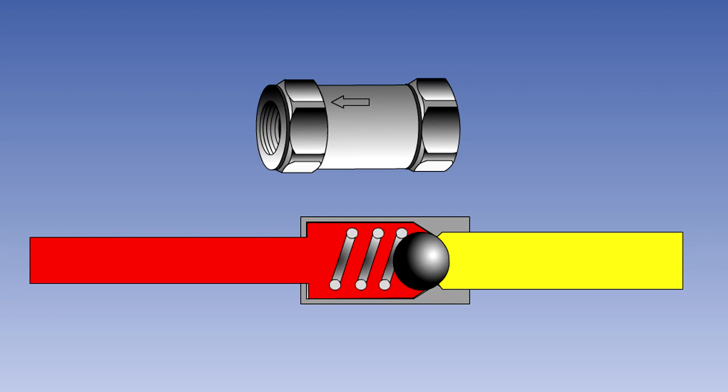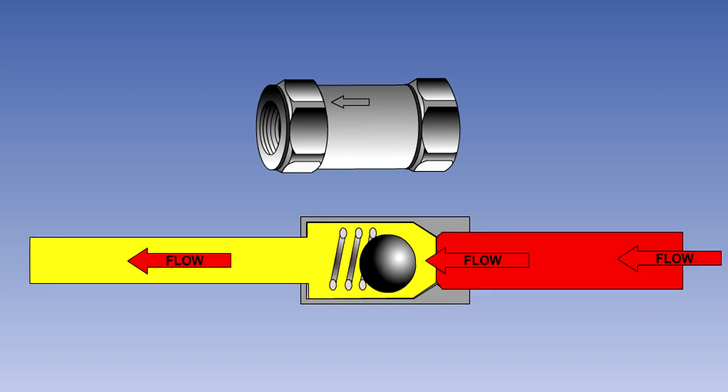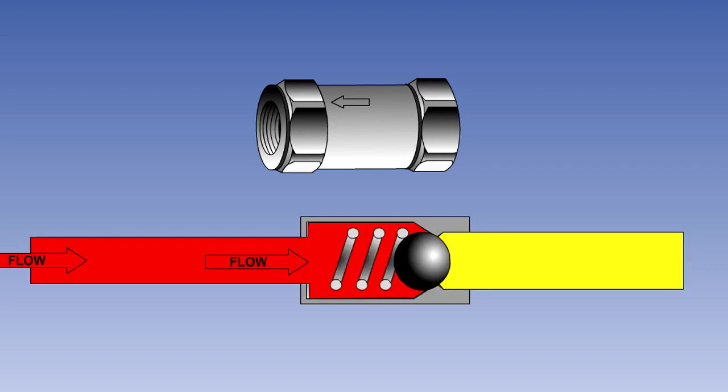In its simplest form, as shown here, the valve consists of a ball held in place by a lightly loaded spring. Fluid flowing in the direction of the arrow has no difficulty in overcoming the spring pressure and pushing the ball off its seat. However, if the fluid attempts to flow in the opposite direction, then it will force the ball onto its seat and form a seal.